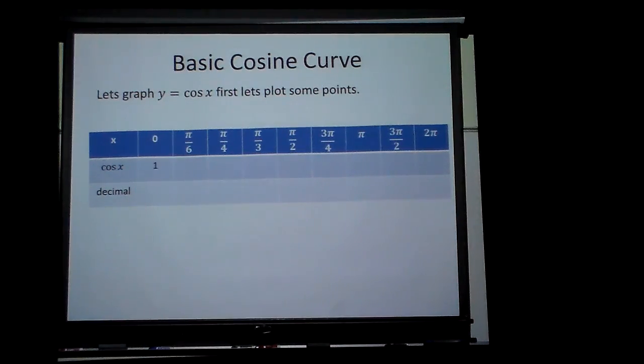Cosine at zero is one, which would be one as a decimal. But at π over six, cosine is square root of three over two, which is about 0.866. At π over four, it's square root of two over two, which is 0.7.